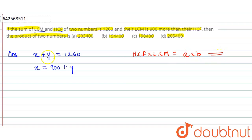First we need to solve these both equations. What we'll do is we'll take the second equation and put it in the first. So solving it, we'll get 900 + y + y = 1260.